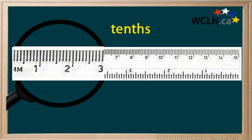The metric ruler is divided into tenths. That is, there are 10 divisions in each centimeter. Each division in the centimeter is one millimeter, or one tenth of a centimeter.